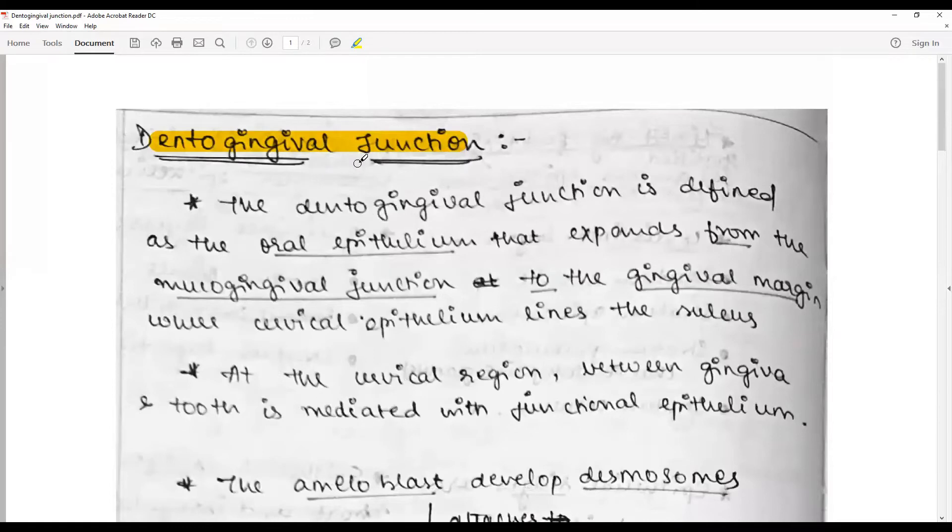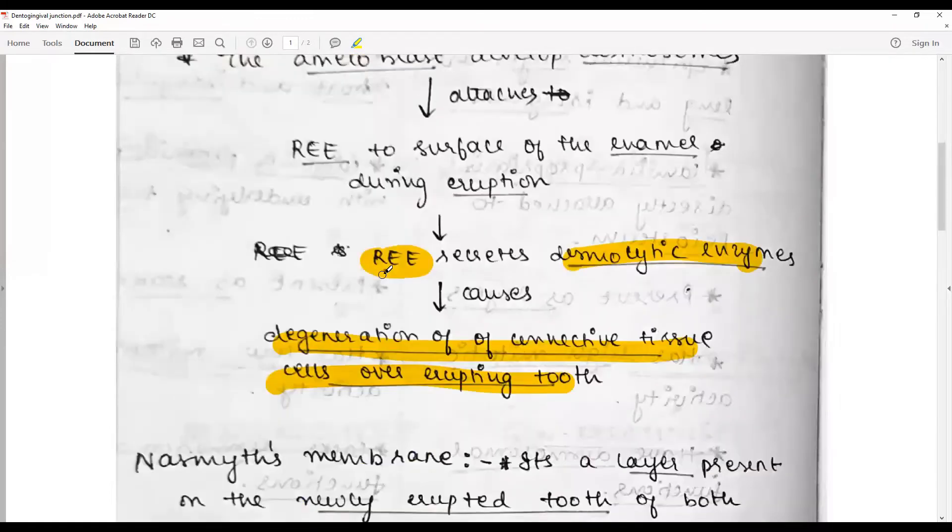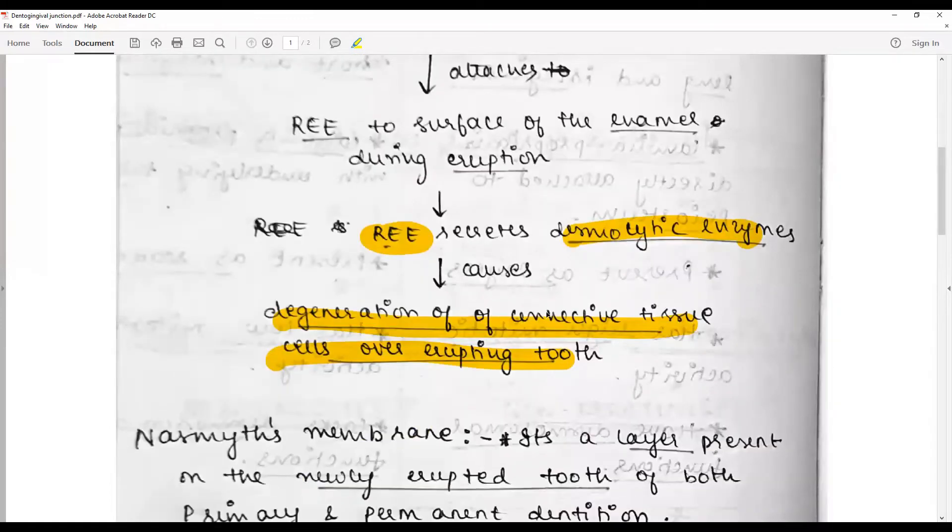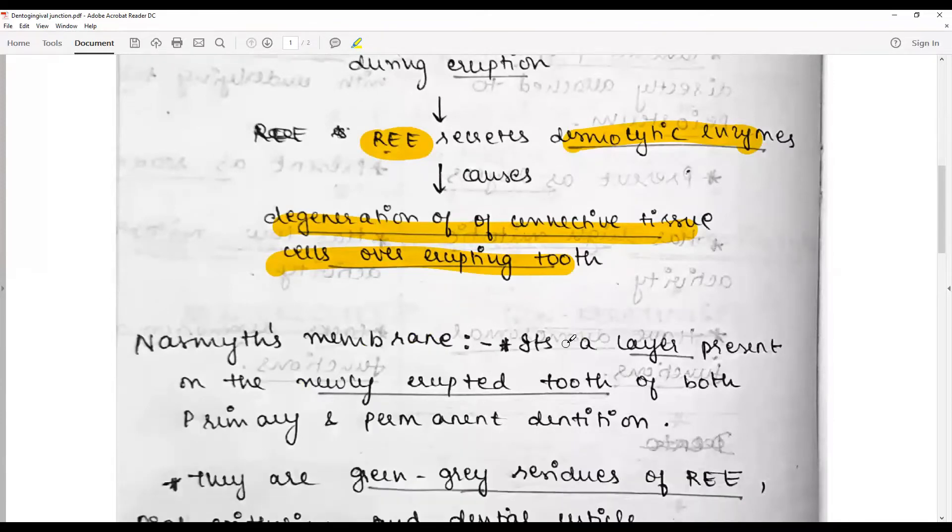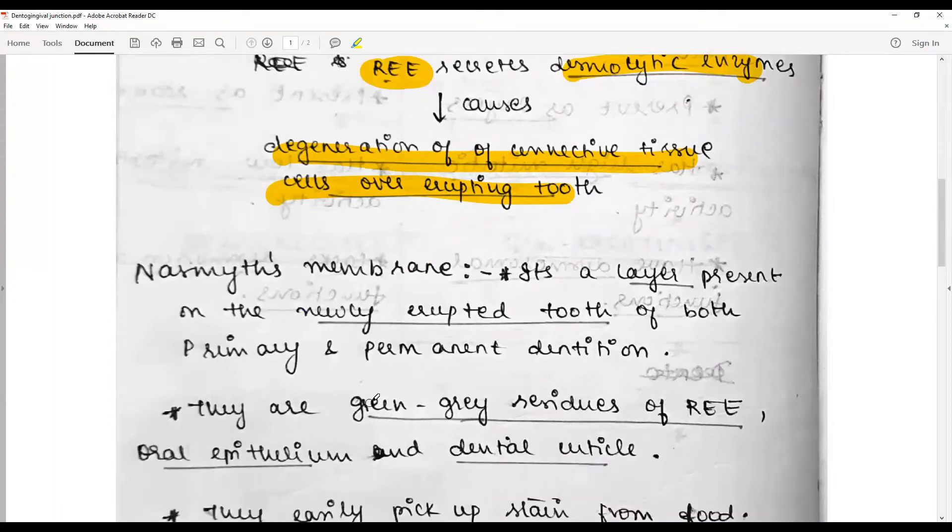That is how the dento-gingival and junctional epithelium is formed. The remaining epithelium unites with this to form the junctional epithelium. Nasmyth's membrane is a layer present on the newly erupted tooth of both primary and permanent dentitions